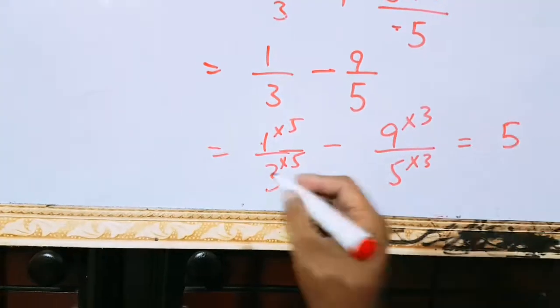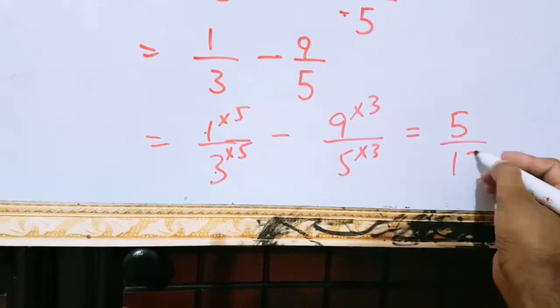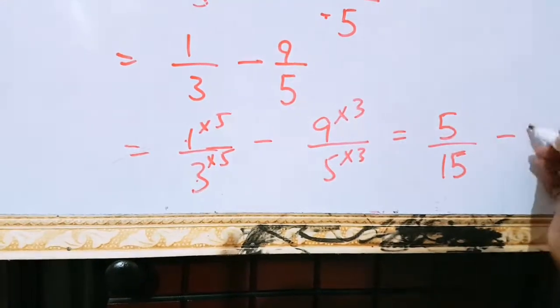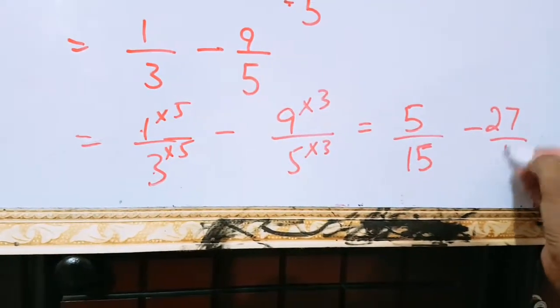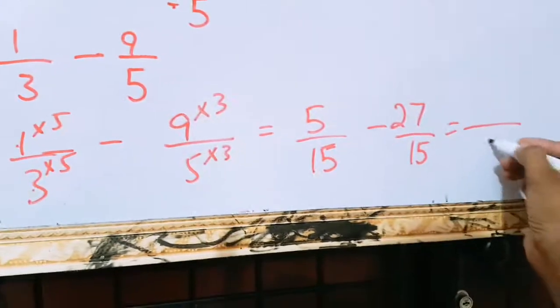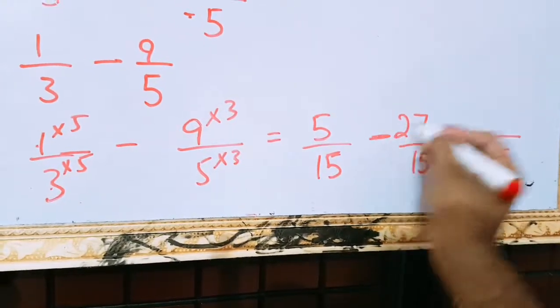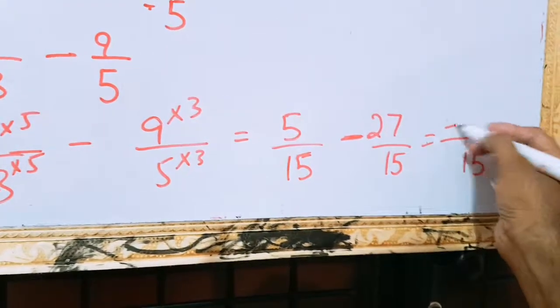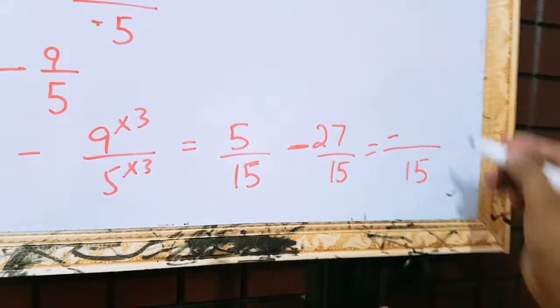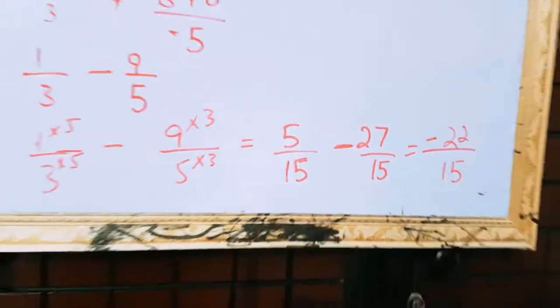1, 5's are 5. 3, 5 times 15. 9, 3 times 27. 5, 3 times 15. 15 will be written only once. And bigger value is 27. It's sign will be used. 27 minus 5 is equal to 22. You can do further division.